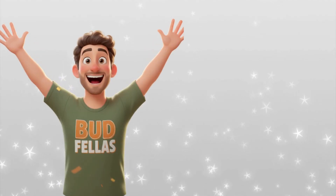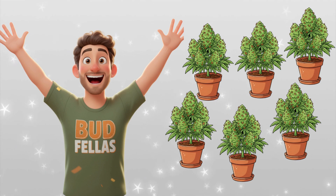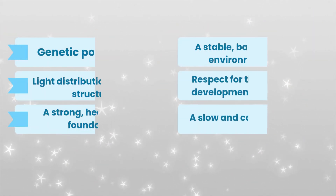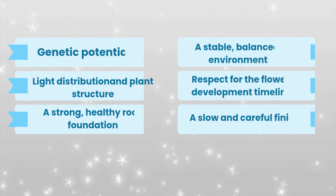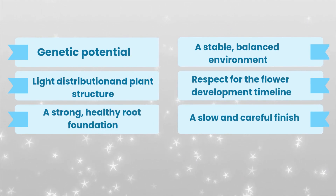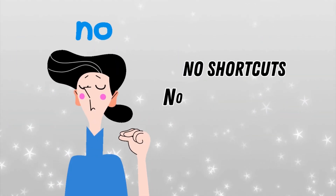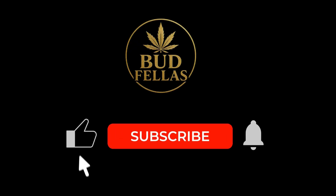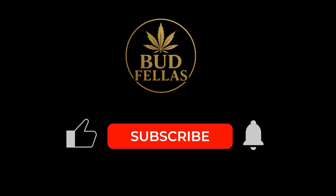So legends, maximising yield is not about adding more — it is about understanding more. Yield is shaped by genetic potential, light distribution and plant structure, a strong healthy root foundation, a stable balanced environment, respect for the flower development timeline, and a slow and careful finish. There are no shortcuts. There are no magic formulas. The plant already knows how to grow — it has known for thousands of years. Our role is not to force it, but to understand it. Stay lifted, legends.